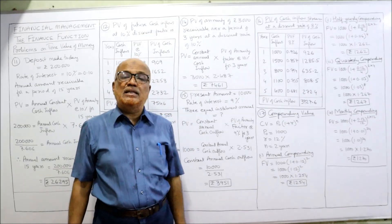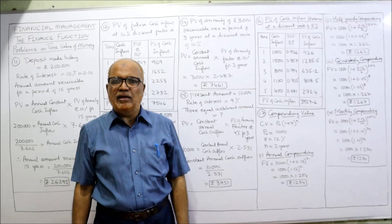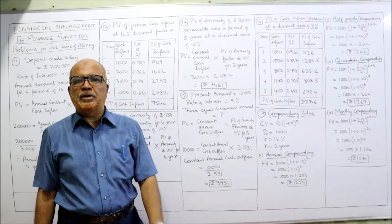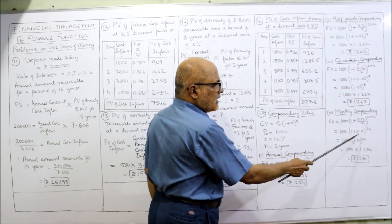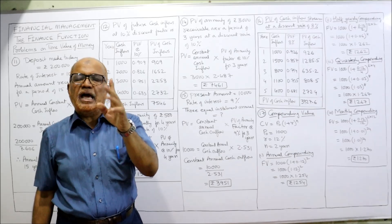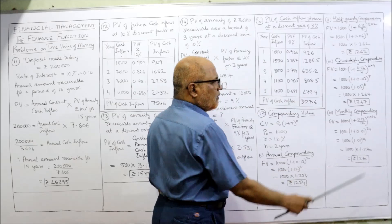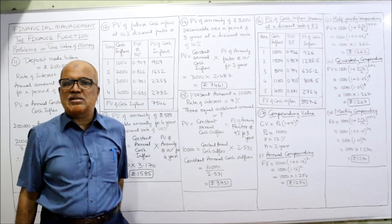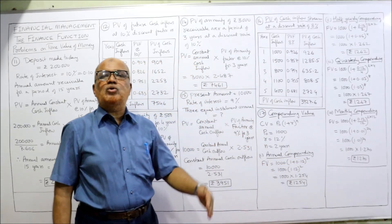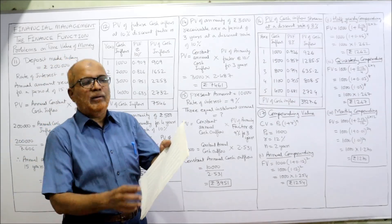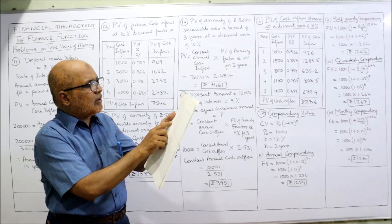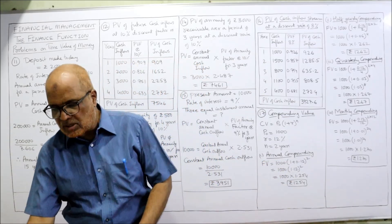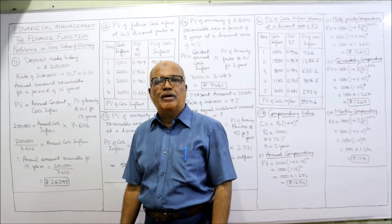For monthly compounding, interest is compounded 12 times a year. The monthly rate is 12% ÷ 12 = 1% (0.01). Over 2 years there are 24 months (2 × 12), so 1.01 to the power of 24. From the compound value table at 1% for 24 periods, the factor is 1.270. So the compound value with monthly compounding is 1,270. This concludes problem number 17.